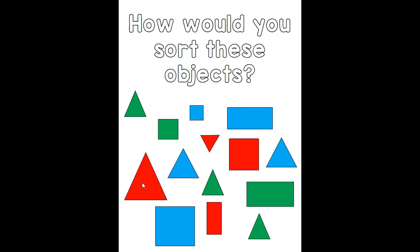A last way that you could sort some of these objects would be by color and by shape. If you take a quick look, you will notice we've got a blue triangle and another blue triangle — those two shapes could go together. We've also got a green triangle and another green triangle, and a blue square and a blue square. So there are lots of different ways that you could sort these objects. Good job thinking of ways.